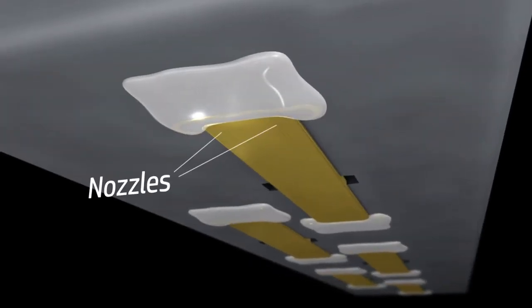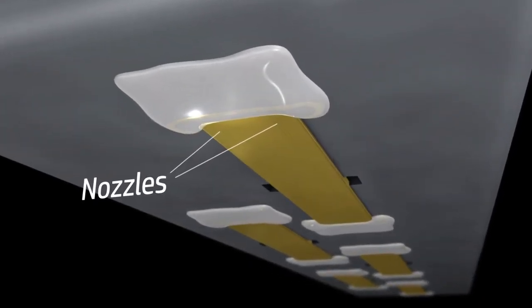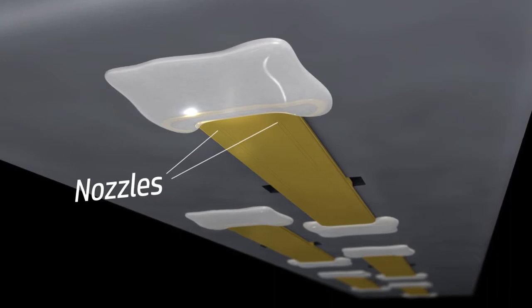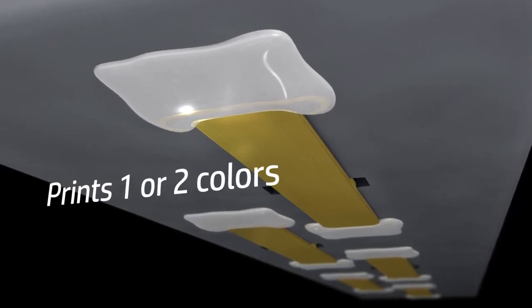There are two groups of nozzles near the left and right edges of the die. Each group has its own ink supply, so the printhead can print one or two colors.